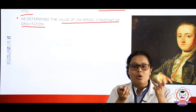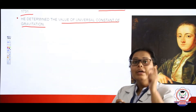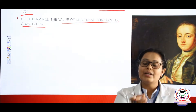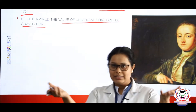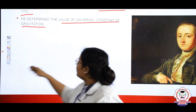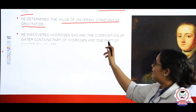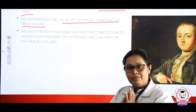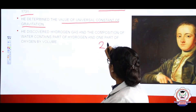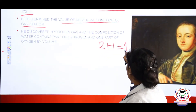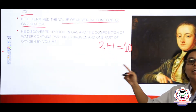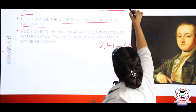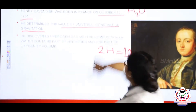This particular gravitation constant was used for the formulation to help Newton find the gravity of two different masses. After that, he discovered hydrogen gas and the composition of water. In his experiment, he found that for every two parts of hydrogen, he had taken one part of oxygen — that is why the formula of water is H₂O.